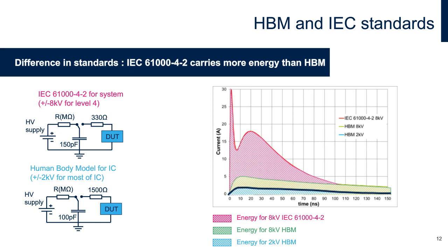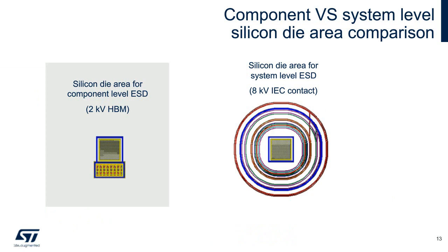You may wonder why integrated circuits do not feature system-level ESD protection. Here we show two integrated circuit protection layouts using the same scale. On the right side, you can see the size of an IEC protection at 8 kilovolts, which is much bigger than the size of the 2-kilovolt HBM protection on the left. This means integrating 8-kilovolt IEC protection is not cost-effective in expensive advanced MOS technologies. This is why the system-level ESD protection is kept external using specific silicon technologies.